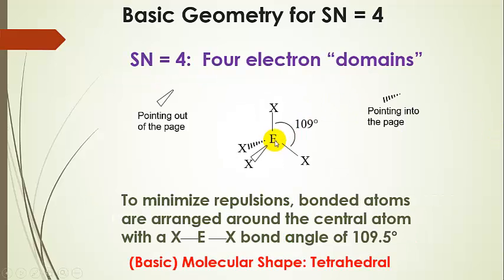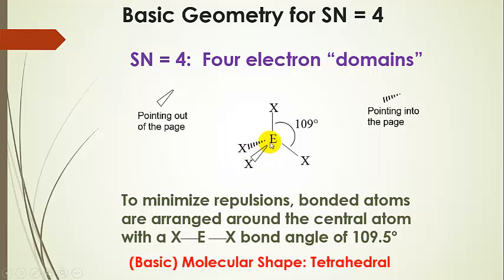Our next one is tetrahedral. This atom is coming out of the screen, that one's going behind the screen, and these two are in the plane. We have four electron domains — four bonded atoms in this basic geometry. In order to minimize repulsions, all of these are about 109.5 degrees apart, and we call this shape tetrahedral. It's a 3D shape, not planar, and we use wedges and hashes to show the geometry.